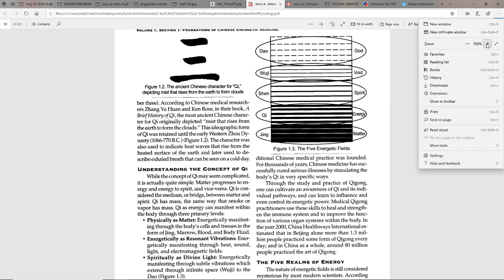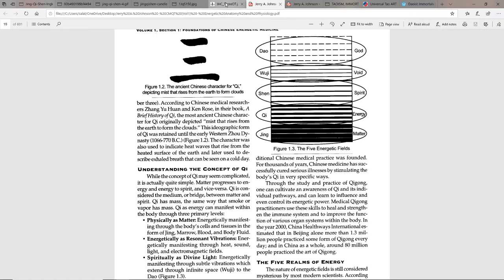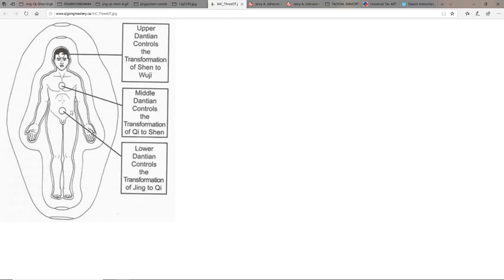As we look over here understanding this, we have what we would call basically three dantians. These dantians are those energetic reservoirs of energy. These are places where the energy pools in different vibratory rates. The chi can be basically vibrating at such a rate that we would call it jing, and jing is stored in the lower dantian. So on this figure, lower dantian is jing, middle dantian is qi, and then the upper dantian is shen.